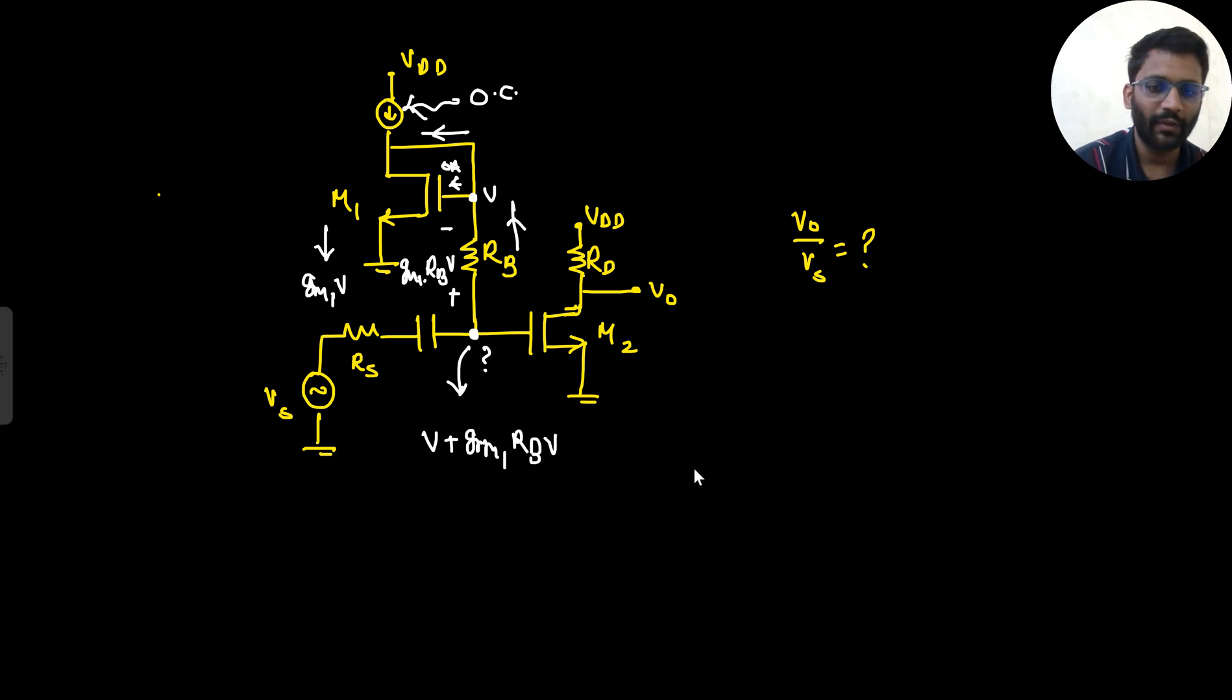So basically the potential here becomes V plus gm1 Rb into V. So what will be our V naught? V naught will simply be minus gm2 into this potential, that is V plus gm1 Rb into V, into Rd. So basically our answer would be minus gm2 Rd into one plus gm1 Rb into V. That would be our answer.